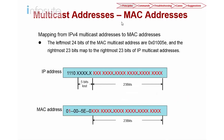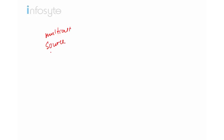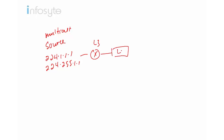It's important for us to know the mapping between the Layer 3 to Layer 2 MAC address. Assuming that I have a multicast source — let's say my multicast source is 224.1.1.1 — and I have a second multicast source group, 224.255.1.1. So I have two multicast sources connected to a Layer 3 device, and the Layer 3 connects to Layer 2.